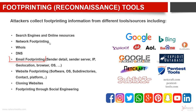There are also many footprinting tools used specifically for email. For example, we can use email header inspection, which gives us sender information, receiver information, sender server IP address, geolocation, browser, and their operating system.